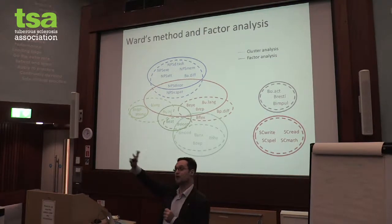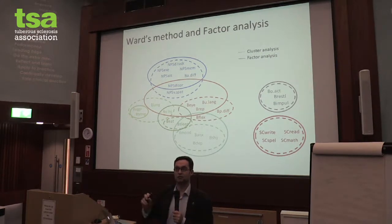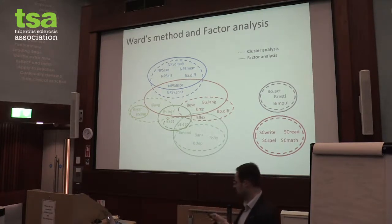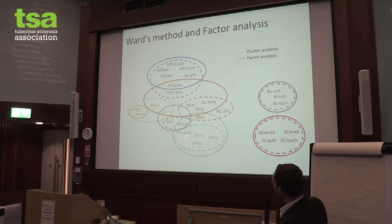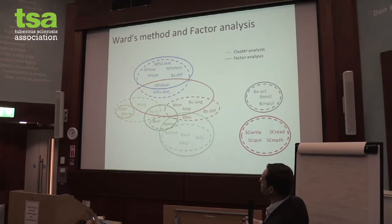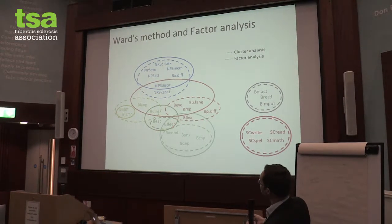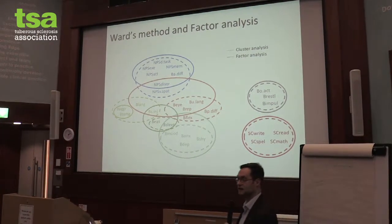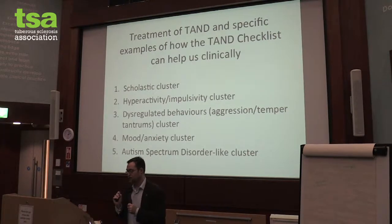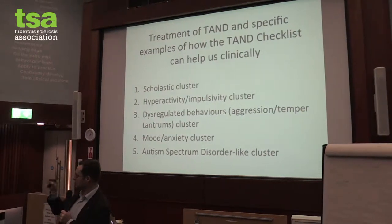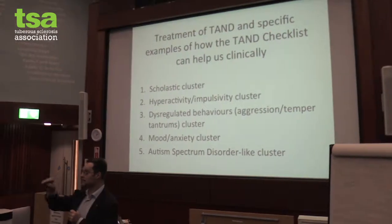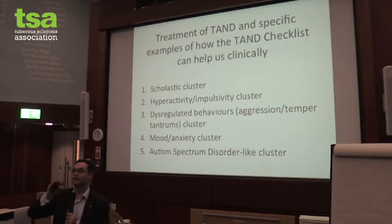I talked about how we tried, with our research, to find little groups — natural clusters of TAN manifestations. We found seven clusters: the scholastic cluster, the overactive-impulsive cluster, the mood cluster, the aggression and temper tantrum cluster, the eating-sleeping cluster, the neuropsychological, and the big autism-related cluster. We're trying to encourage mums, dads, and clinicians to use the cluster approach to identify challenges and think about what we can do next.